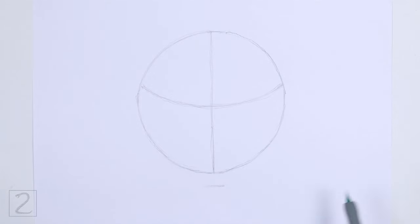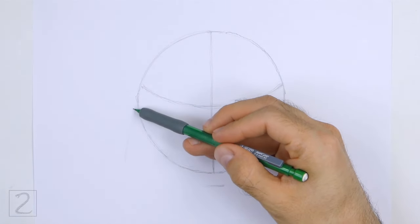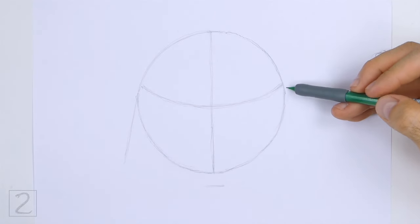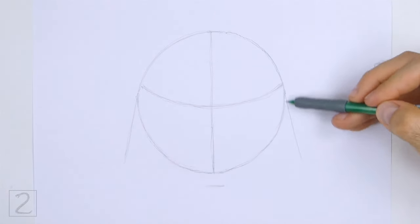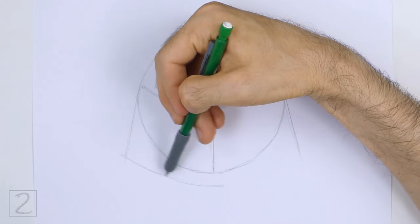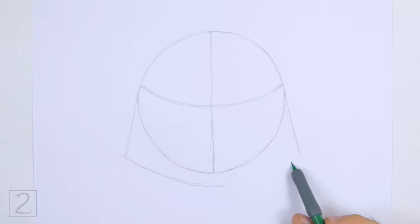Under the circle, make a small mark for the bottom part of the neck. On the sides of the circle, draw long lines for the sides of the neck. Connect the small mark to the sides using long curved lines to finish the guide for the neck.